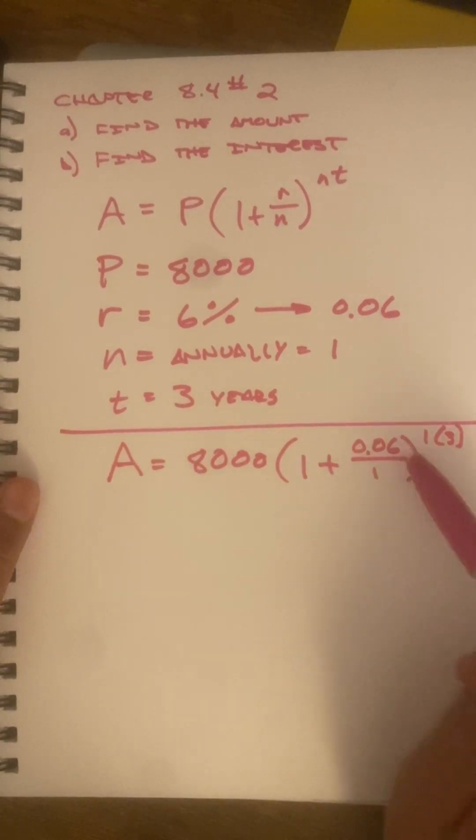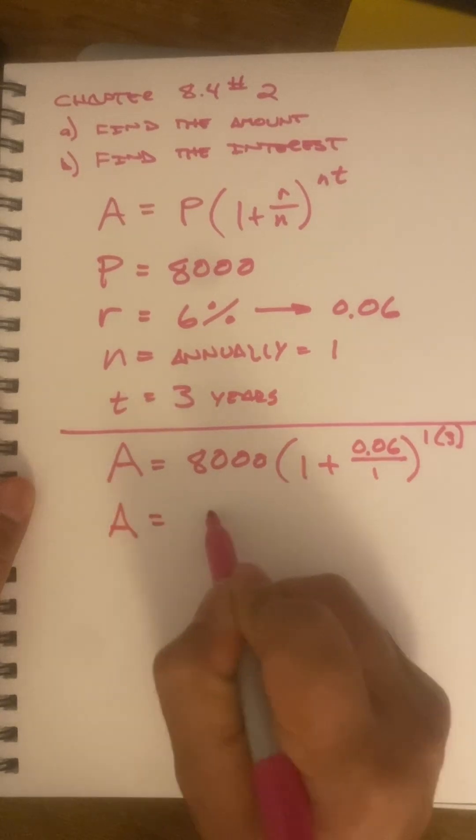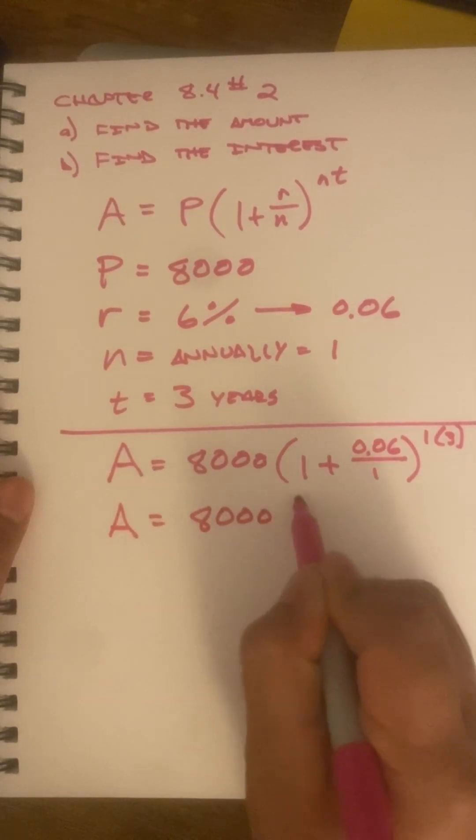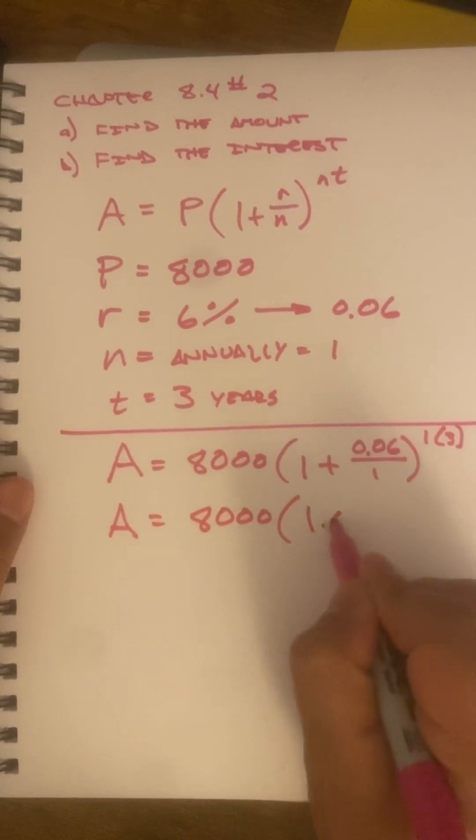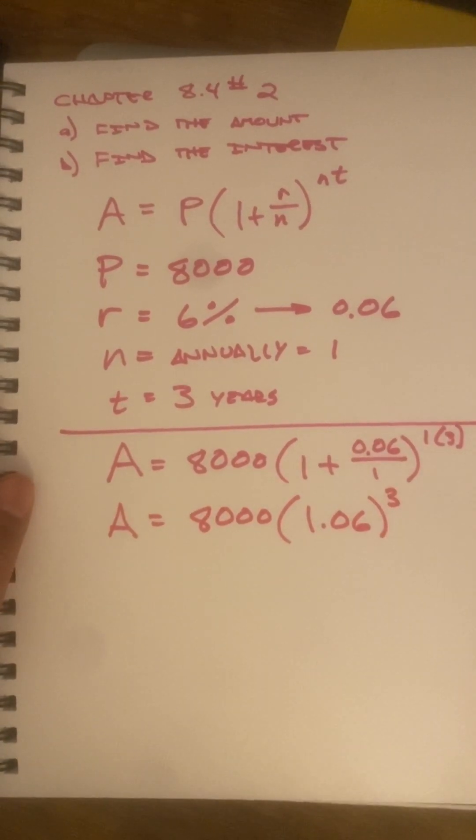As usual, do everything that's inside the parentheses first. And within the parentheses, I have this division and then an addition. So, that's just 8,000 times 1.06. 1 times 3 is just 3. Pretty straightforward.